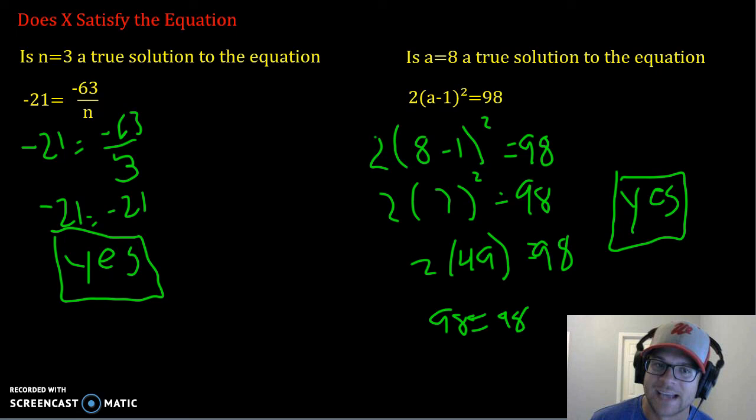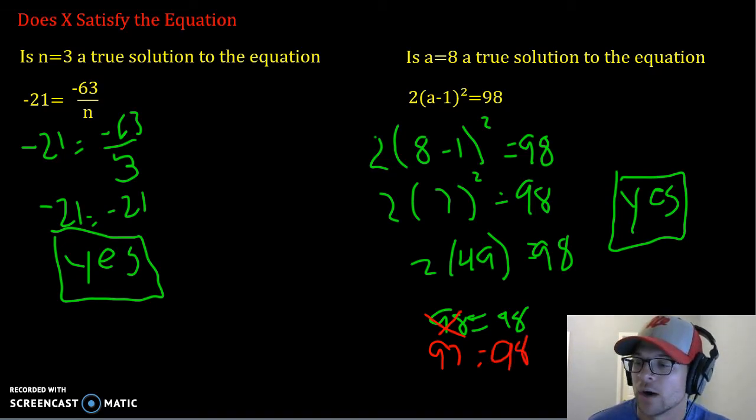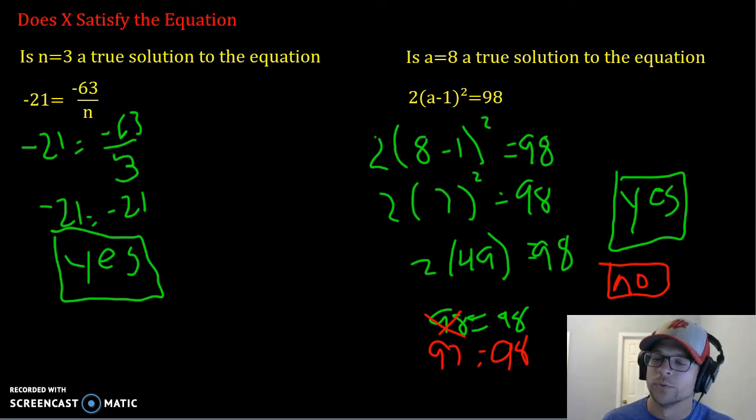Now, if at this last step, let's say for example, instead of 98, you were to get 97, just for hypothetical. Since those two numbers are not the same, then your answer would have been no. It does not satisfy the equation. You have to get it all the way reduced down to the same number on both the left and the right side of your equal sign. If they are different, then your answer is no.